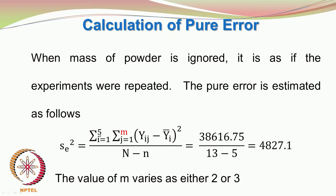We have to calculate the pure error sum of squares. There are a couple of ways of doing it. One way is: Σ (i=1 to 5) for 5 independent settings, then j=1 to m where m is the number of repeat observations for every independent setting, and compute (yᵢⱼ - ȳᵢ)² summed and divided by N minus n. That gives 4827.1, where the number of repeats may be either 2 or 3.